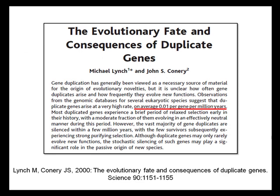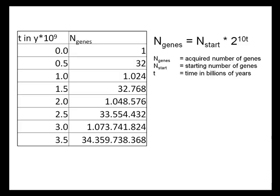Duplicated genes will give rise to complex genomes and can do so quite quickly. Estimates in a study carried out by Lynch and Connery in 2000 state that the average gene undergoes duplication once every 100 million years. This may not seem very quick, but consider a simple calculation: if we were to start off with one gene at 3.5 billion years ago, and a gene duplication takes place once every 100 million years, then today we would have almost 35 billion genes. While it's not entirely certain how many different genes exist in the entire world, this rate is quick enough to account for the huge amount of variation in genes.